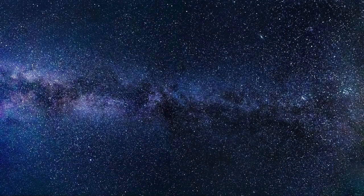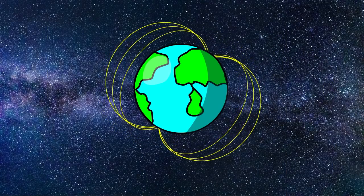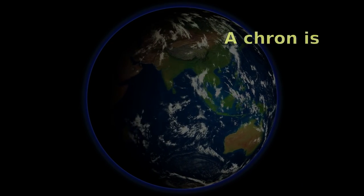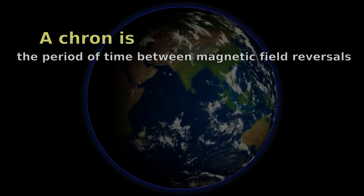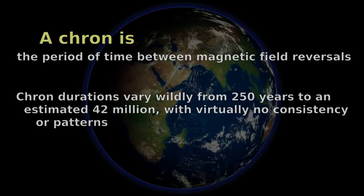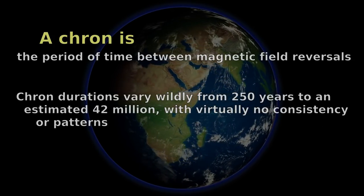The flip, where a magnetic north becomes magnetic south and vice versa, happens pretty often, geologically speaking. On average, the period between flips, which are called crons, lasts about 450,000 years. Crons have been as short as a few years and as long as several million.